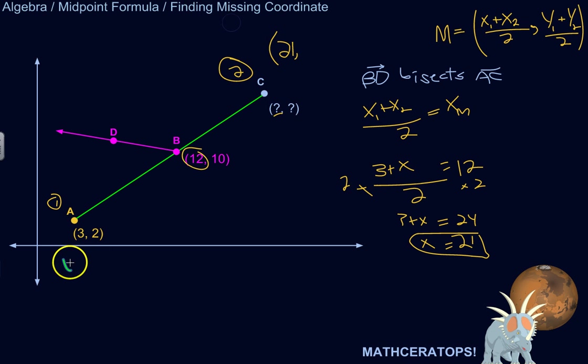So y1 plus y2 over 2 equals the y-coordinate of the midpoint, which equals 10. We know y1 is 2, so I'll rewrite this as 2 plus y over 2 equals 10.